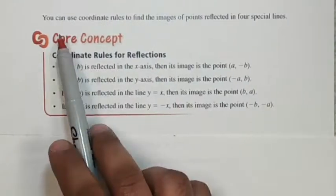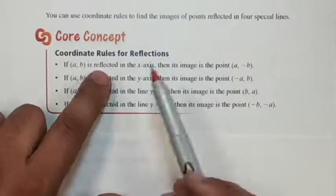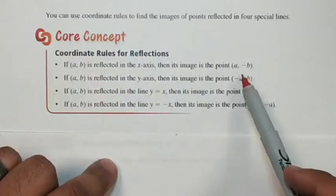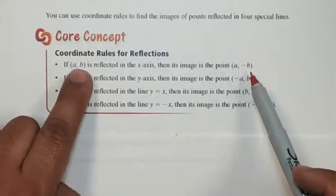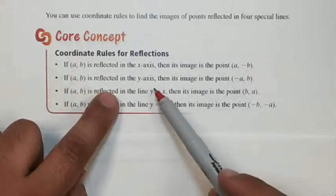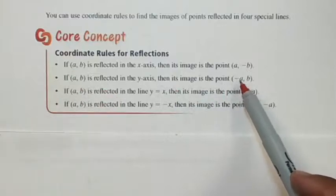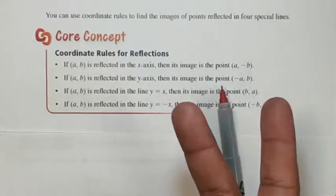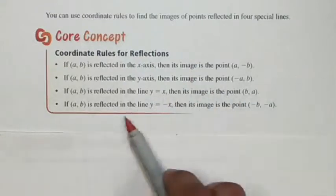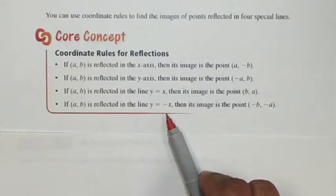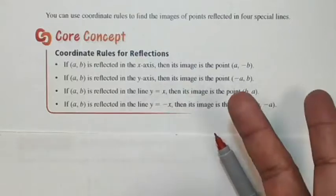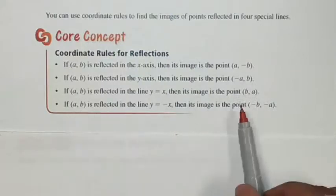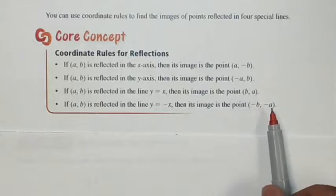There are some shortcuts — coordinate rules — to find the images. If you're reflecting off the x-axis, the only thing that changes is your y-coordinate: (a, b) becomes (a, -b). If you're reflecting off the y-axis, your x changes to its opposite. If you're reflecting across the y equals x line, you flip your x and y values. If reflecting over y equals negative x, you flip them and also negate both values, so (a, b) becomes (-b, -a).